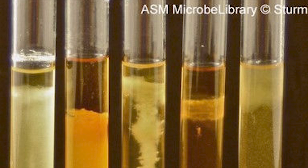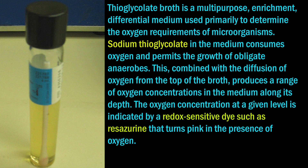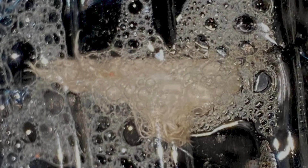Growth from blood culture or growth in thioglycollate broth or nutrient broth is subcultured onto blood agar and MacConkey agar for identification. After gram staining, colonies from blood agar and nutrient agar are identified. For further identification, the catalase test is done on colonies using the slide method. Staphylococcus are catalase positive, while Streptococcus are catalase negative.